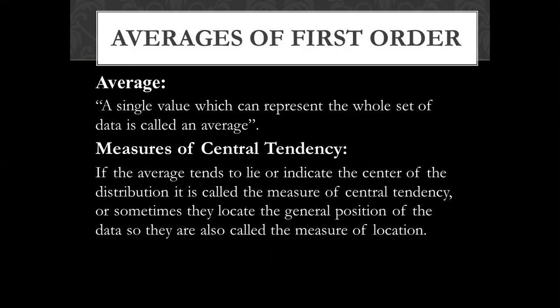For example, if you have 5 values, you add them and divide by 5. The average value will be a single value representing all the data. If the average tends to lie, it will indicate the center of the distribution.